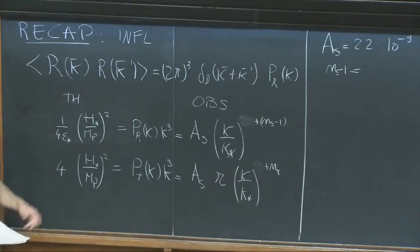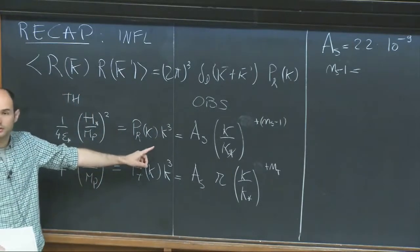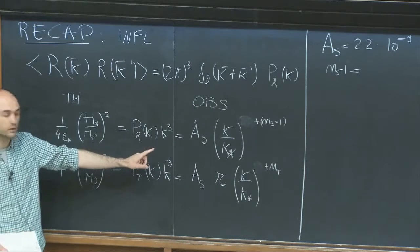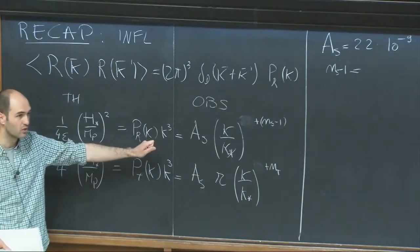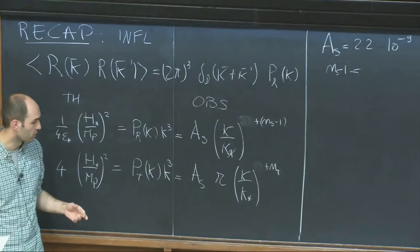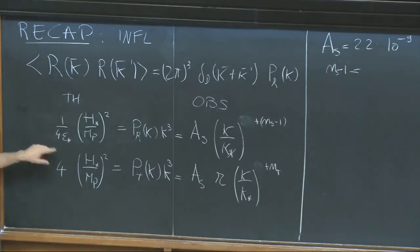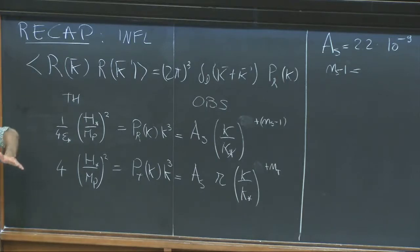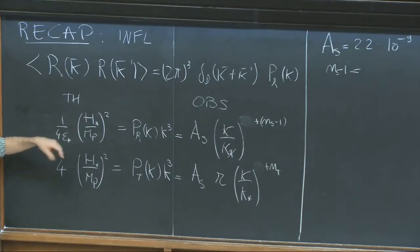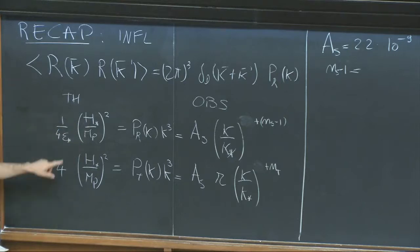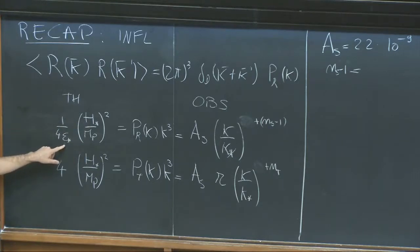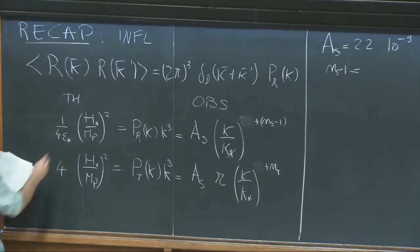That power spectrum went like K-cubed. That was as advertised because of the isometries of de Sitter space, in particular dilation symmetry — the equivalent of time translation in Minkowski. Most importantly, we computed the amplitude and the fact that there is a slight deviation from K-cubed. The amplitude was given by the Hubble parameter during inflation, with a slow-roll factor. This is the theoretical prediction.